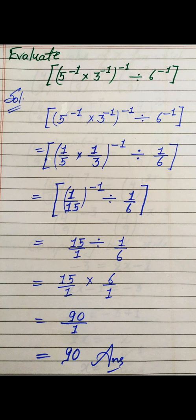The next question: we have to evaluate (5^−1 × 3^−1)^−1 divided by 6^−1. We know how to remove the negative power by taking the reciprocal of the base. So 5^−1 becomes 1/5, and 3^−1 becomes 1/3. There is a whole power of −1 on the bracket. Also, 6^−1 can be written as 1/6. Multiplying numerator by numerator and denominator by denominator, 1×1 = 1 and 5×3 = 15, giving (1/15) to the whole power −1, divided by 1/6.